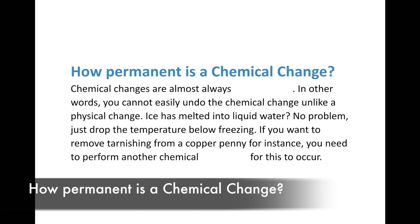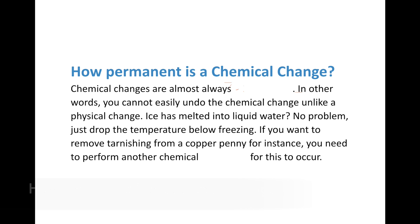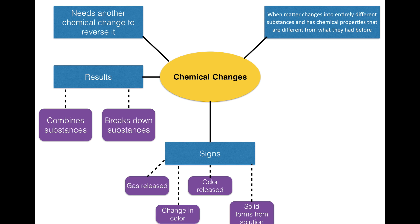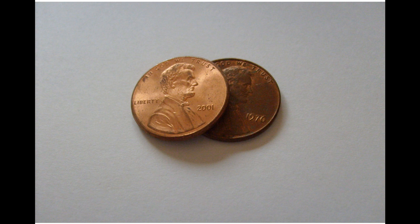Now, how permanent is a chemical change? Chemical changes are almost always permanent. You can't easily undo them like a physical change. For example, you can melt ice back to water and refreeze it easily. But with a chemical reaction, you usually need to perform another chemical reaction to reverse it. For instance, a copper penny that's tarnished and turned green needs another chemical reaction — like mixing with salt and vinegar — to remove the tarnishing and restore it.